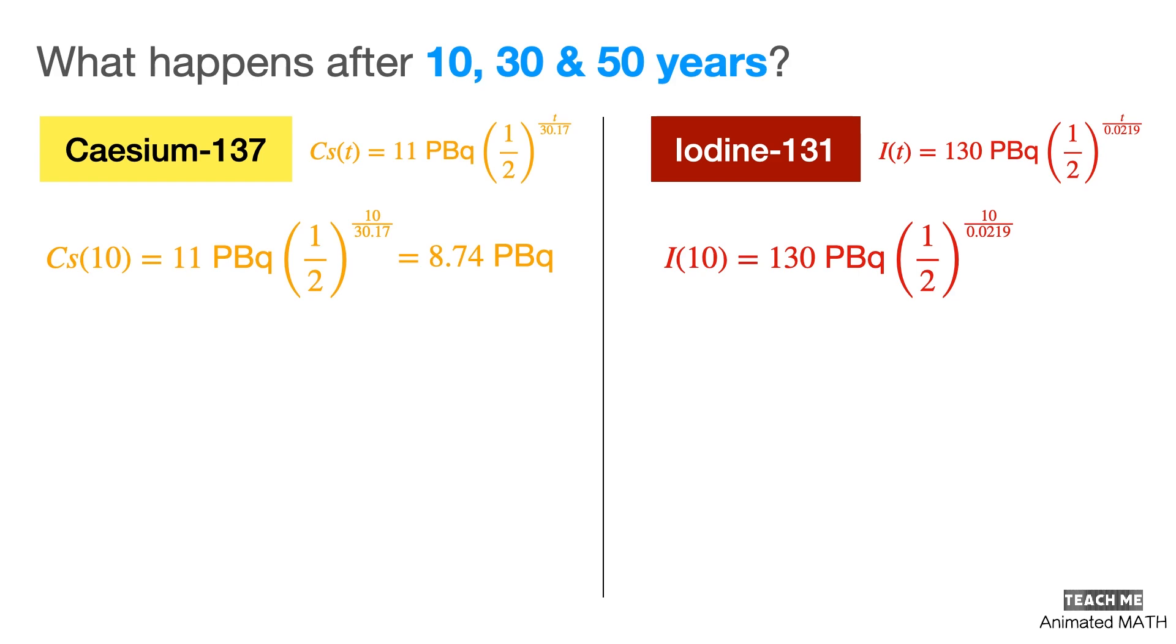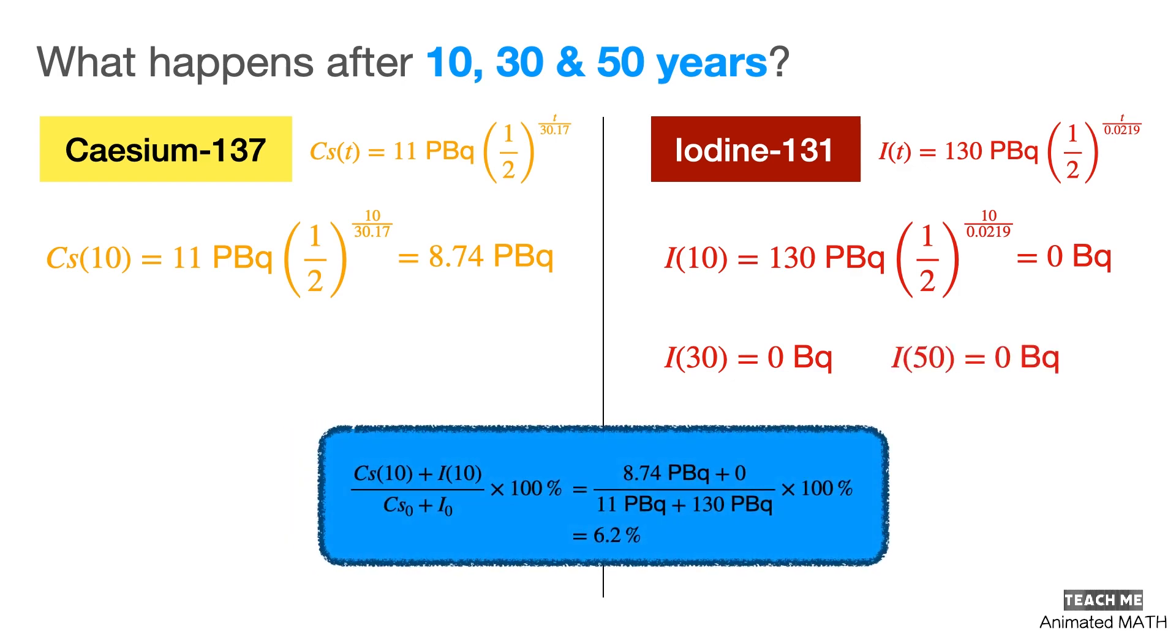For iodine-131, however, that would practically be 0 left after 10 years because of how fast its half-life is. In total, this is around 6.2% of the initial values.